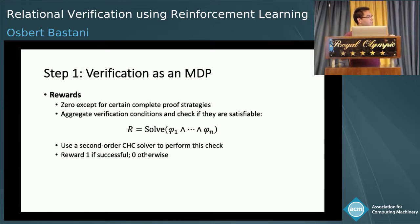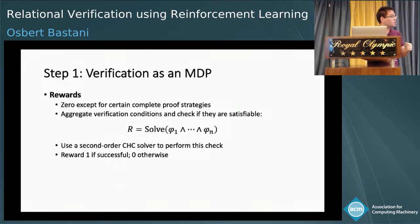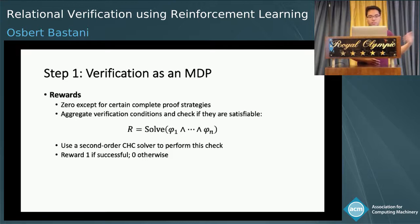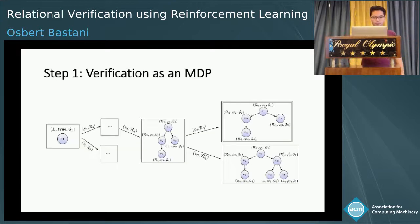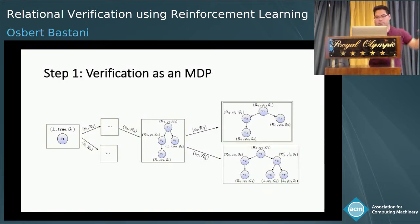The rewards in the MDP are zero everywhere except for certain complete proof strategies. If we have a complete proof strategy, we aggregate the verification conditions and check if they're satisfiable according to the underlying solver. For relational verification, we use a second-order constrained horn clause solver to perform this check. The reward is one if this check is successful and zero otherwise. Here is a diagram showing the full MDP: states are proof strategies, actions and transitions are applying inference rules, and you can see an example of the final state on the top right with no undischarged sub-goals.